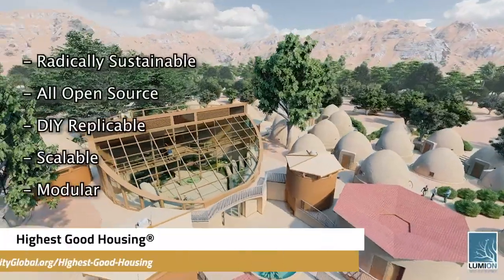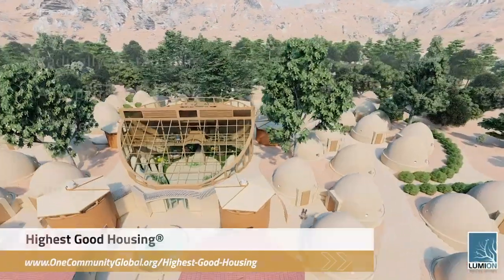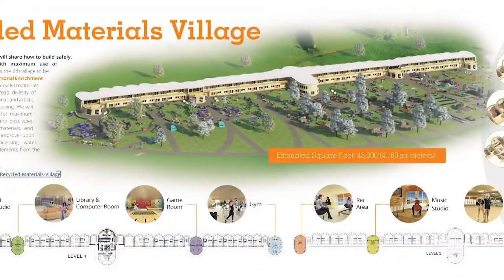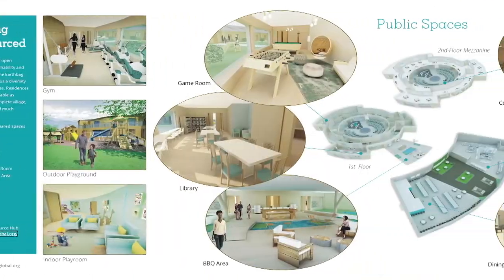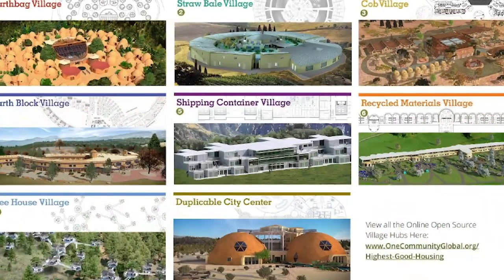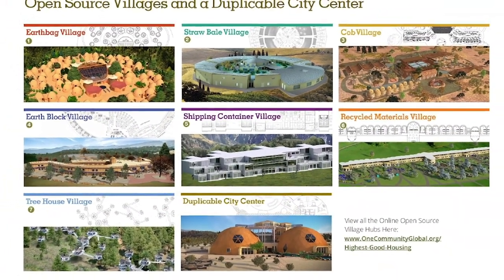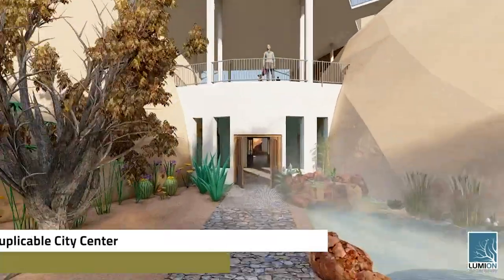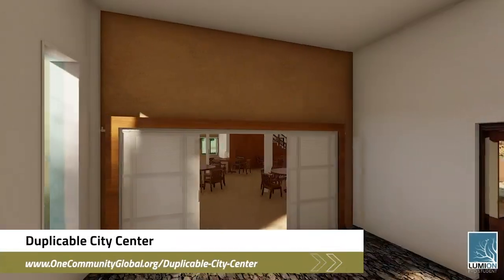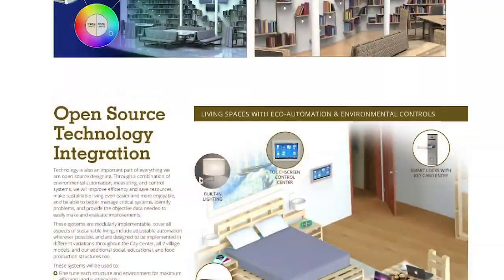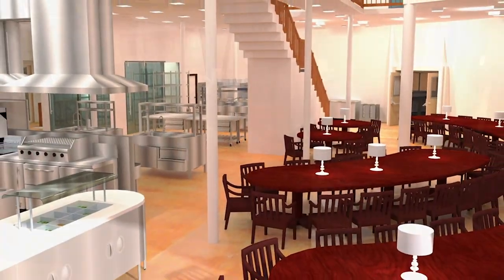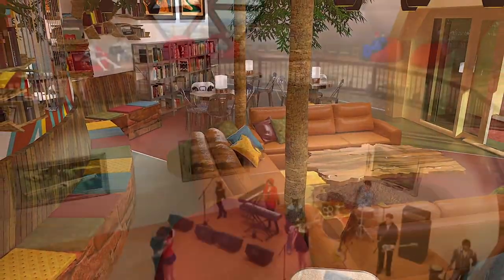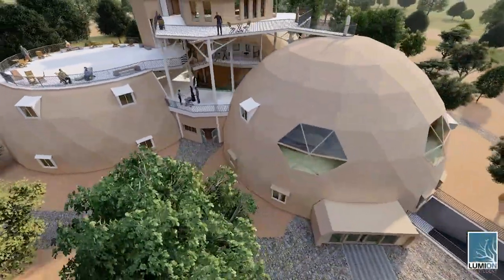The One Community approach to highest good housing is eco-artistic home building that is affordable, sustainable, do-it-yourself duplicable, resource and space efficient, and consists of seven different sustainably constructed village models. One Community is also creating an open source duplicable city center designed to be LEED Platinum certified, provide 12 guest rooms, dining for over 150 people, and laundry and recreation space for over 300 people, all while saving money, time, space, and resources.